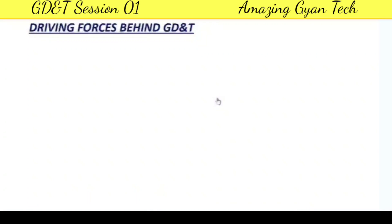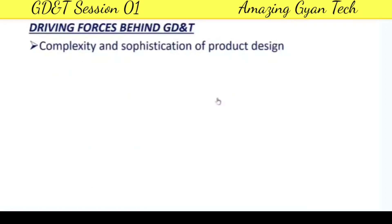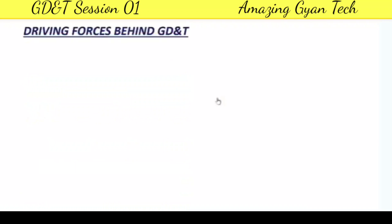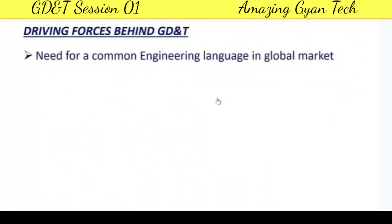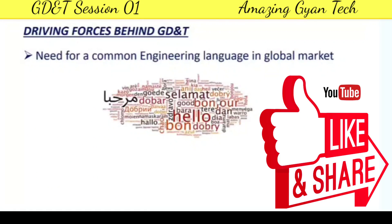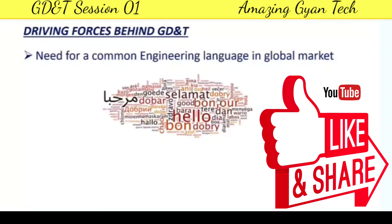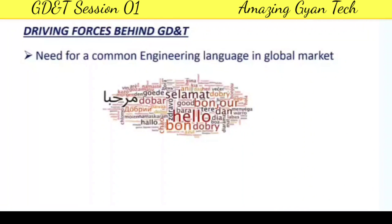The driving forces behind GD&T: the main one is the complexity and sophistication of product design. In today's environment, new products are developed daily with growing sophistication, so we need GD&T to ensure components are properly explained to the manufacturer. Another driving force is the need for a common language. As the global market is open — doing business between India, the US, or the UK — we need a common engineering language for drawing communication, just as English is used for business. For that, GD&T was developed and is now called the common engineering language.